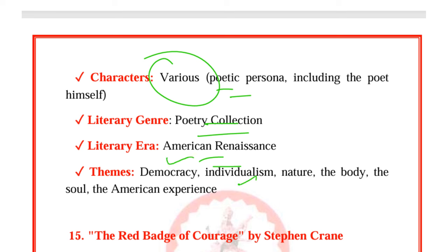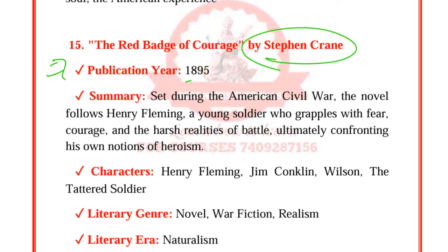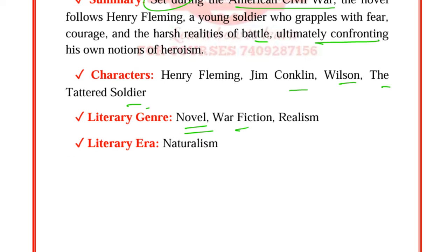Leaves of Grass by Walt Whitman is a very important work, first published in 1855 with multiple editions. This landmark collection of poetry celebrates the human spirit, democracy, and the beauty of the American landscape. Whitman's free verse and expansive vision have made it one of the most influential works in American literature. It belongs to the American Renaissance. Themes include democracy, individualism, nature, the body and the soul, and the American experience.